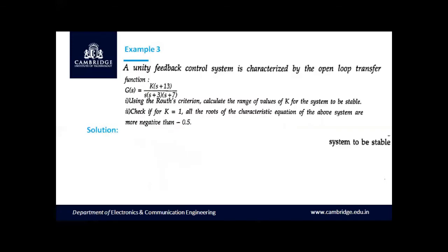Next example: a unity feedback control system with open-loop transfer function G(s) = k(s + 13) / [s(s + 3)(s + 7)]. Using Routh's criterion, calculate: (1) the range of values of k for stability, and (2) check if for k = 1, all roots of the characteristic equation are more negative than -0.5, i.e., to the left of the line s = -sigma where sigma = 0.5.